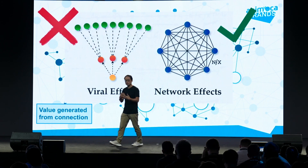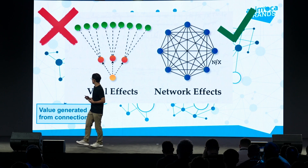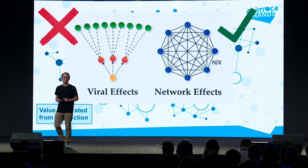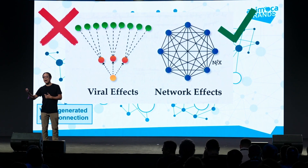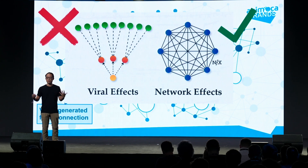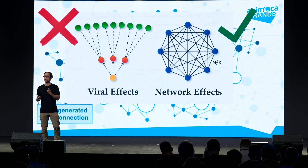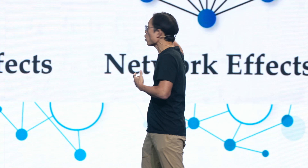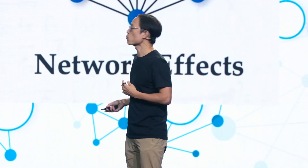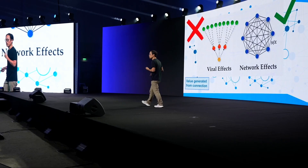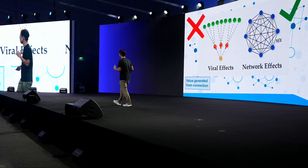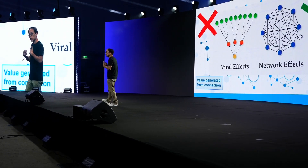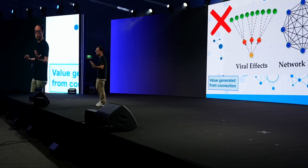A few things to distinguish: viral effects are not network effects. You can avail yourself to user growth and grow really fast, but that does not produce a network effect. It helps you get users that can potentially create a network effect. So bringing in customers is great, but you need customers to talk to each other — you need them to build a network. Just users alone is not enough. How do they come together? How do they create a community to build these networks?